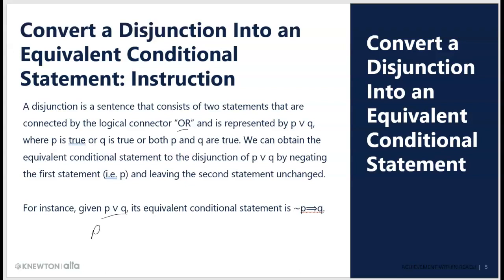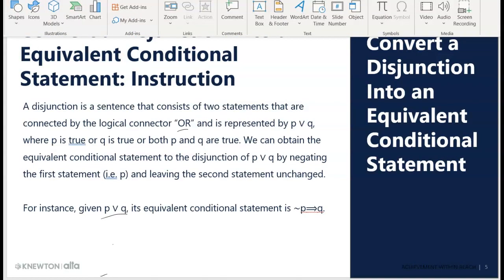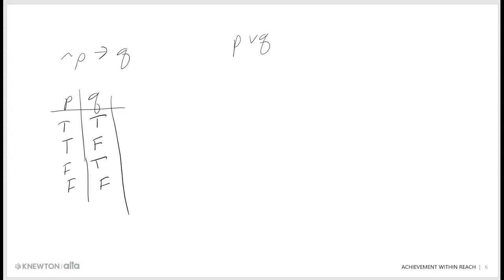I'm going to make the truth table for if not P, then Q, and show that it's the same as P or Q. I have P and Q. I always set up a truth table with two statements in four rows. I need a column for not P, and then I'm going to put Q over here, so I can put the answer in the middle and they are in the correct order for the conditional.